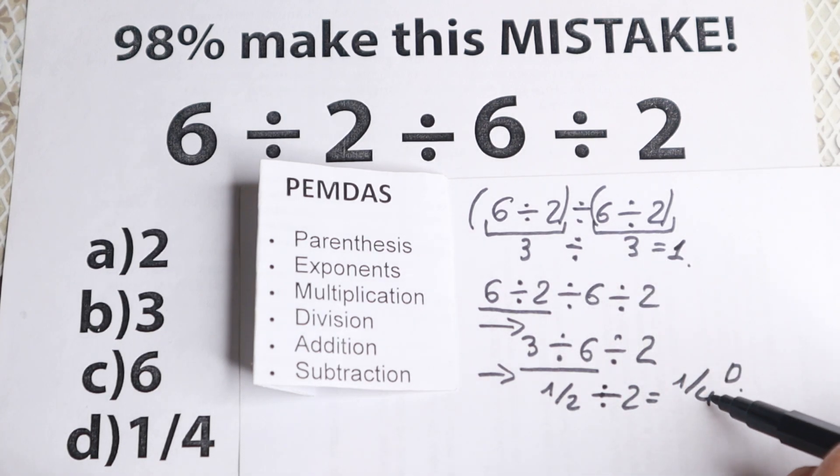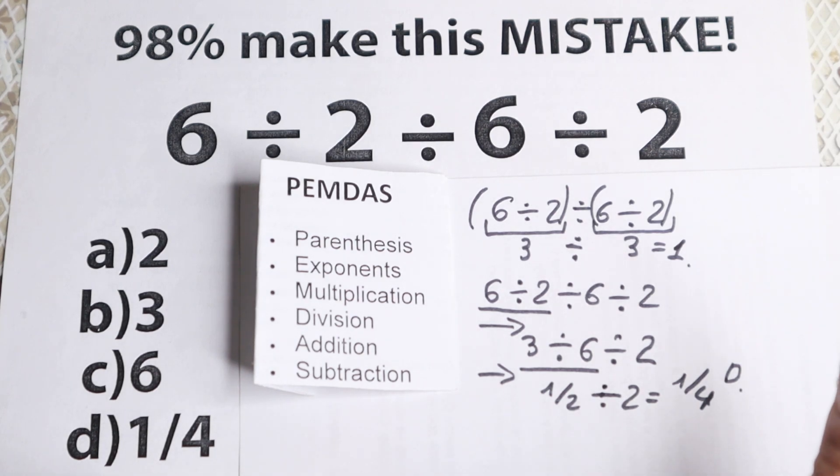So you can easily check this answer in your calculator. No parentheses, no exponents, and you will have your 1 over 4. So definitely don't feel bad if you got this wrong.